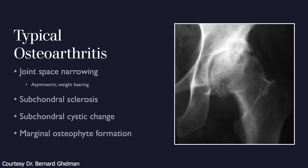Let's look at a fairly typical example of primary osteoarthritis. We have the standard features: joint space narrowing that is asymmetric, located in the superolateral aspect of the joint, which is the weight-bearing portion — so that's where you'd see maximum cartilage loss. You can also see subchondral sclerosis, cystic change, and marginal osteophyte formation.